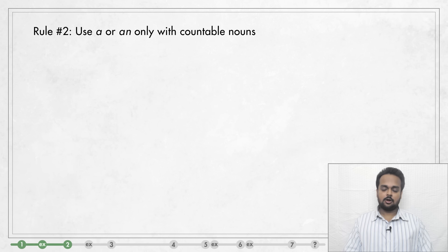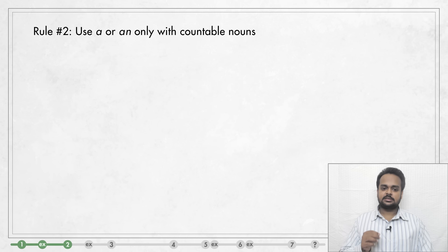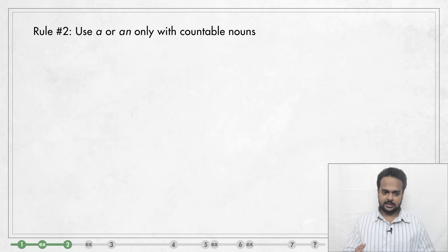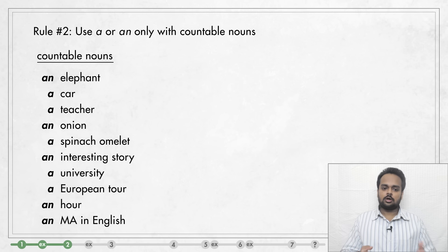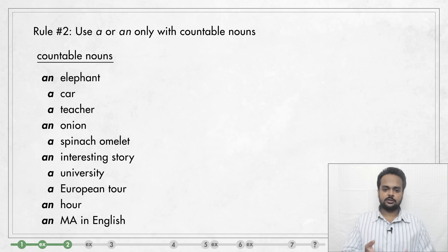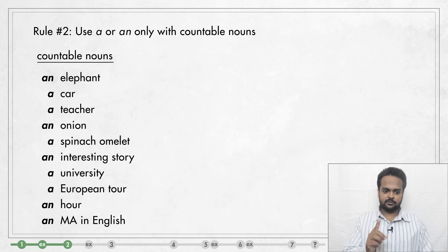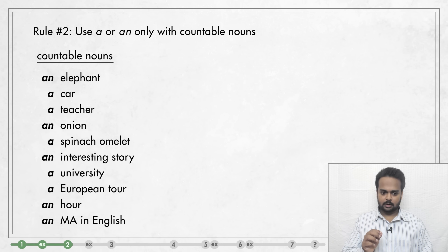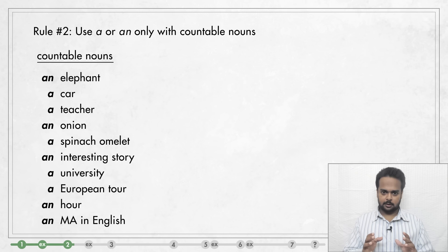Use A and AN only with singular countable nouns. We say that a noun is countable if we can count it — one, two, three, four, etc. All of these words on the screen are countable. We can say one elephant, three cars, ten teachers, five hundred onions and so on. If you talk about one person or thing, like one elephant or one car, that's called a singular noun. And if you say ten teachers or five hundred onions, those are called plural nouns.